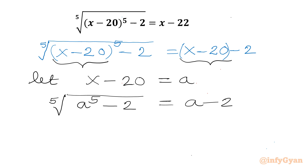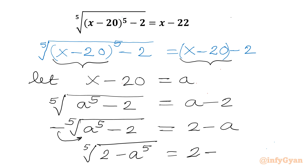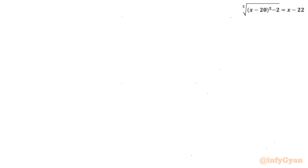Now I will multiply both sides by minus 1. So we get the 5th root of negative a to the power 5, minus 2, equal to 2 minus a. Now I will take this minus sign into the radical, so it becomes the 5th root of (2 minus a) to the power 5. The right-hand side is 2 minus a. Adding a to both sides, the equation becomes a plus the 5th root of (2 minus a) to the power 5, equal to 2.